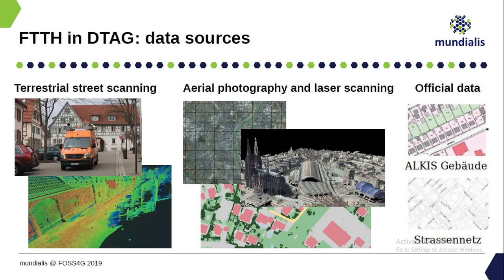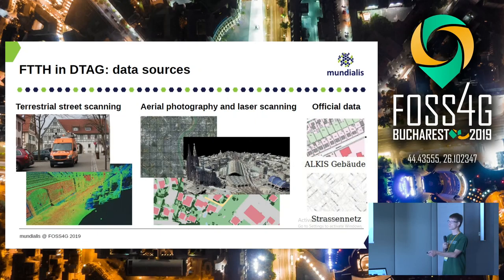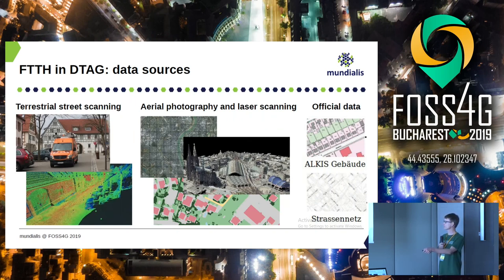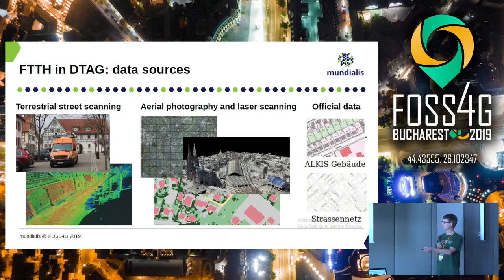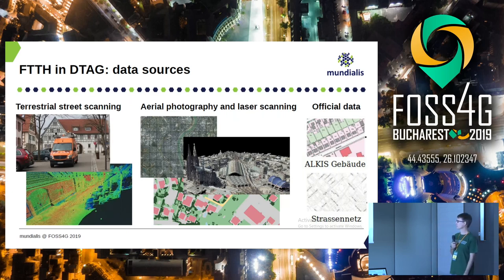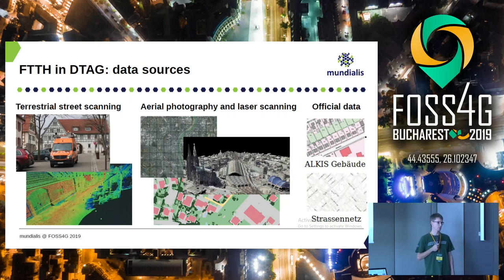There are different data sources used here. One is a street car which comes with a lot of sensors — cameras and laser scanners — scanning everything including houses. The problem is behind the houses you cannot see anything because the car is driving on the street. So we had to overcome this problem with a different approach. Not surprisingly, aerial photography is relevant here, and laser scanning or photogrammetric point clouds, which are sometimes also available or derived from stereo imagery.